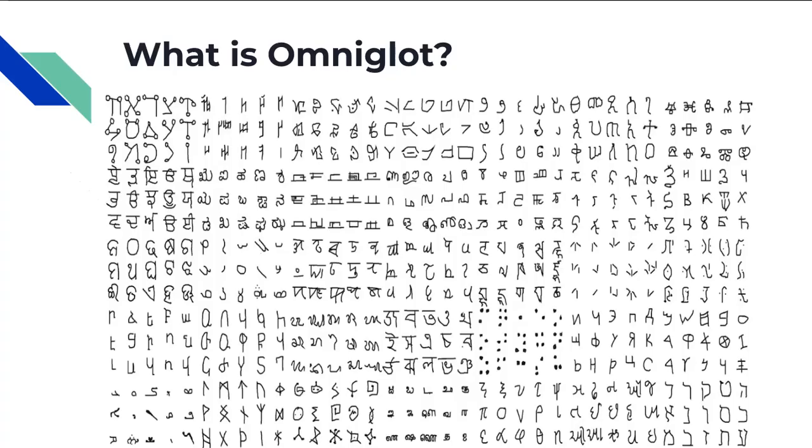So what is Omniglot? Omniglot is an online encyclopedia focused on languages and writing systems. We used the Omniglot dataset for one-shot learning. It contains 1623 handwritten characters from 50 different alphabets.